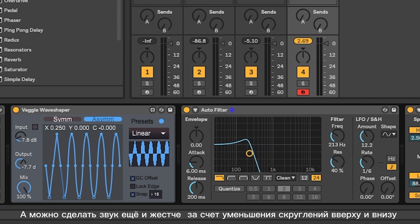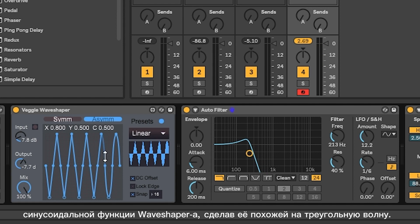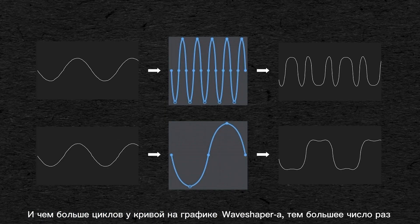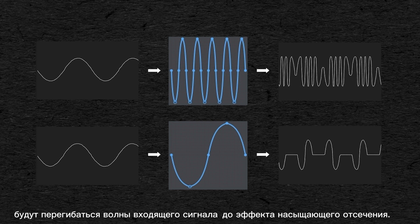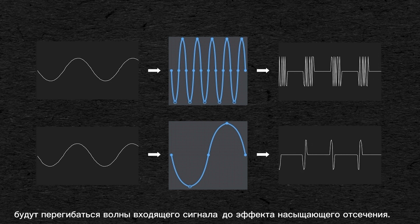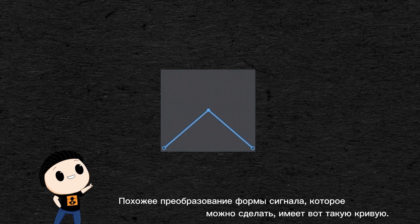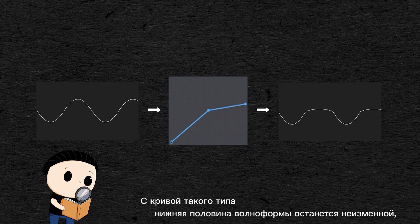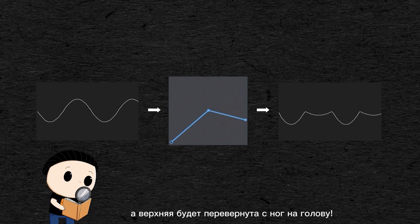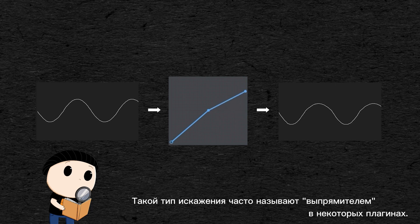You can make the sound even harsher by reducing the slope at the top and the bottom of the sine shape to make it look like a triangular wave. And the more back and forth the curve does on the waveshaper's graph, the more times you can fold back the incoming signal before saturating the effect. A similar waveform transformation you can do is having a curve where the bottom half of the waveform stays unchanged but the top half is flipped on its head. This type of distortion is often called rectify in some synths and plugins.